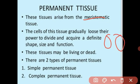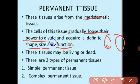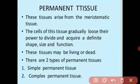But when meristematic tissue takes a permanent shape and size, performs a particular function, and loses its power of division, this tissue is called permanent tissue. Is that clear to all of you?